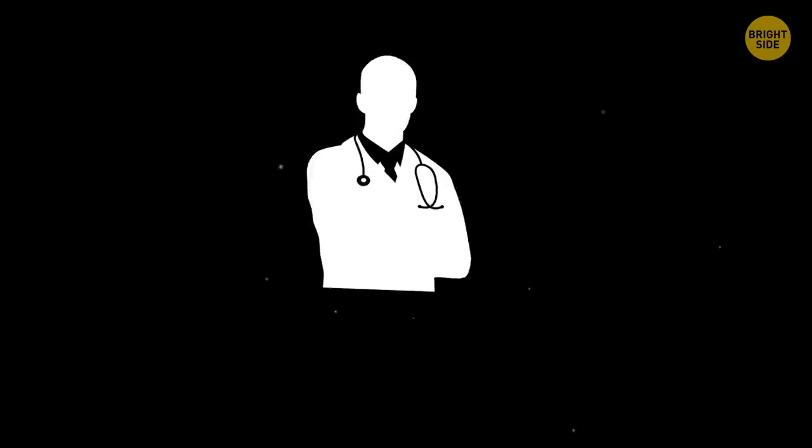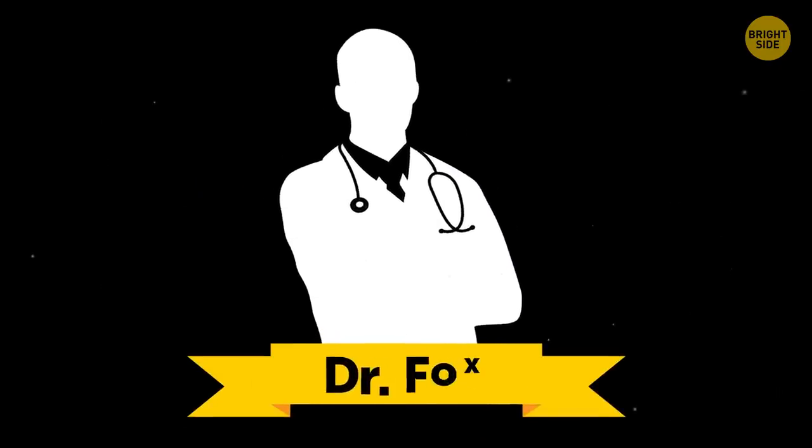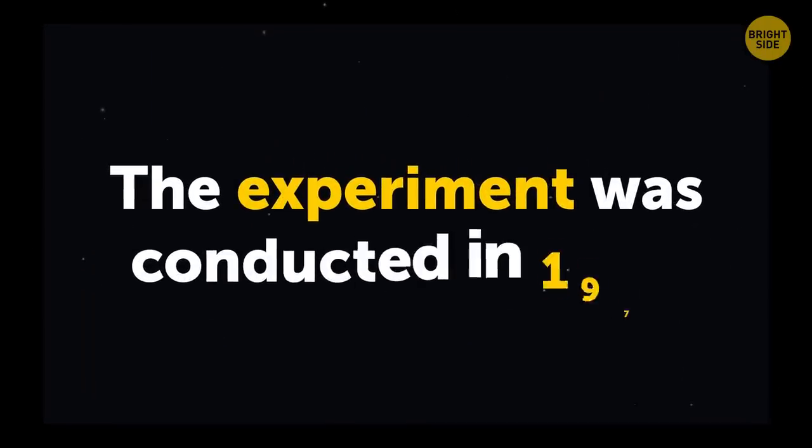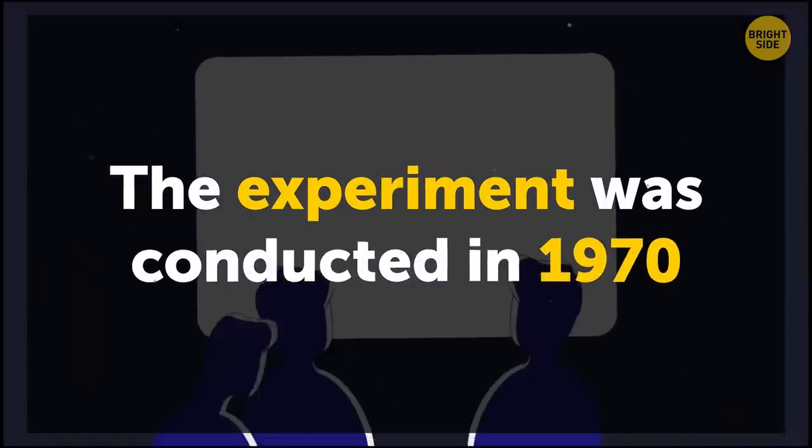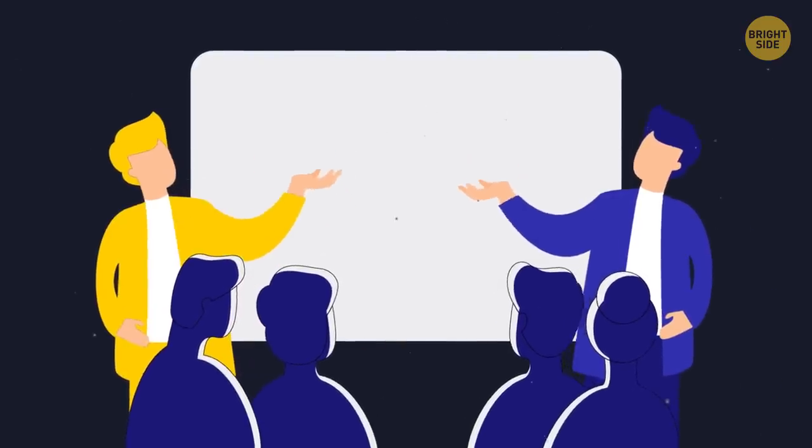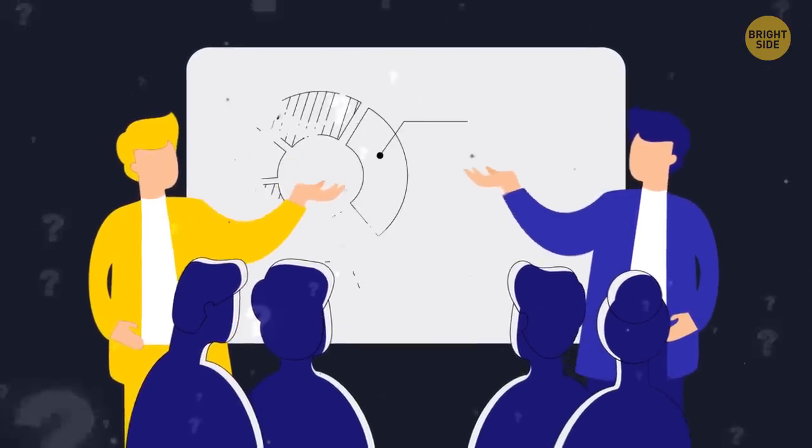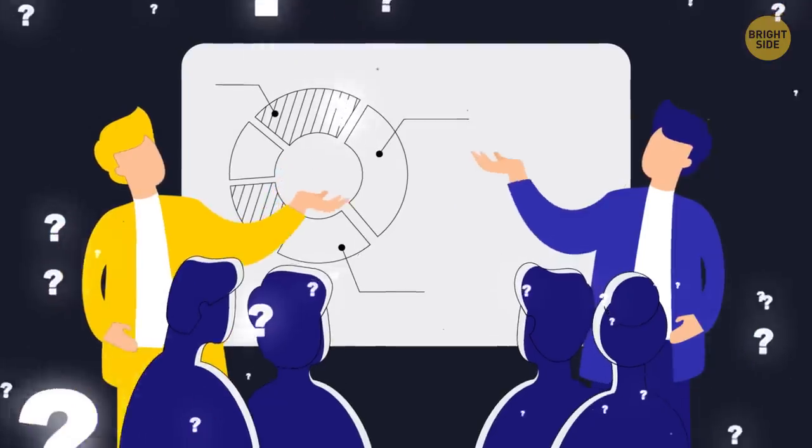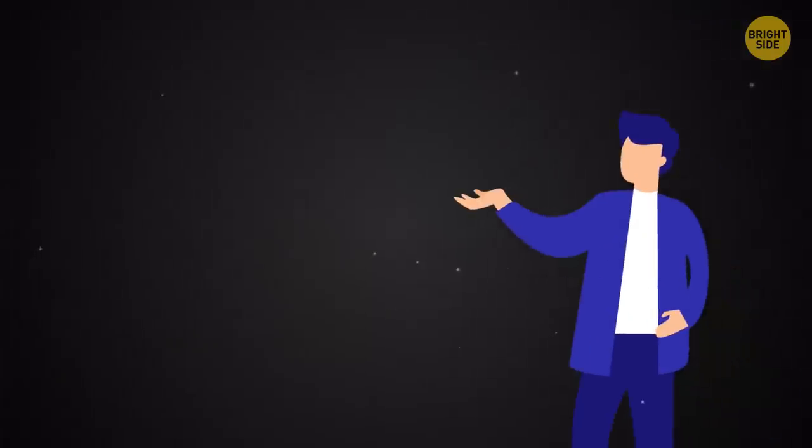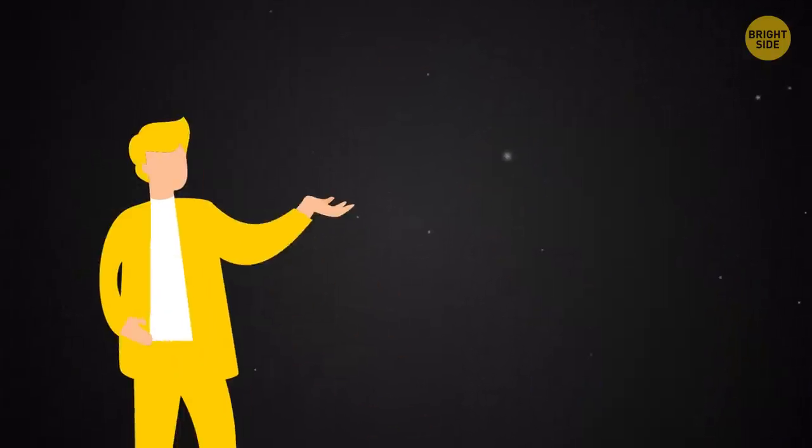Number 2. Dr. Fox Effect. Don't get confused by the name, it's not after any doctor. In fact, quite the opposite. The experiment that gave this effect its name was conducted in 1970, when two speakers gave lectures to an audience of trained psychiatrists and psychologists. The topic was chosen specifically so that none of the trainees knew anything about it for the experiment to be valid. The catch was that one of the lecturers was a real scientist. While the other was an actor, Michael Fox, under the alias of Dr. Myron L. Fox, an Albert Einstein College of Medicine graduate.